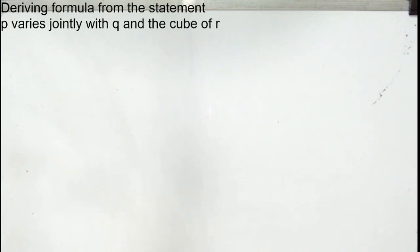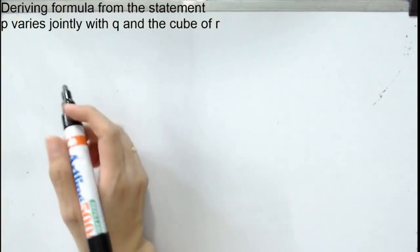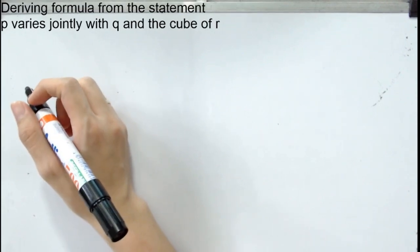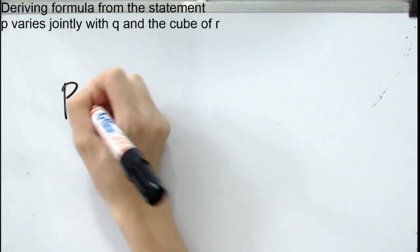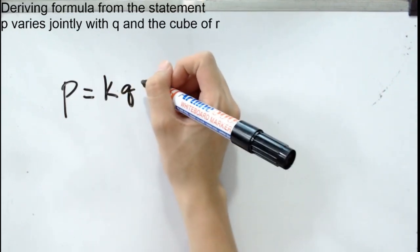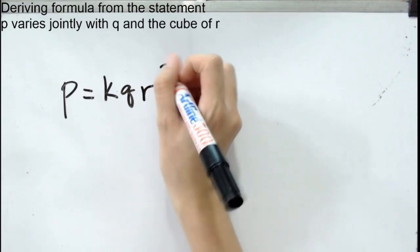Deriving the formula from the given statement: P varies jointly with Q and the cube of R. Therefore, the first thing we do here is to write what will be the formula from the given statement. Again, as I told you, whichever letter comes first will be the first letter that we need to write. If P varies jointly with Q and the cube of R, when we say cube of R, R raised to 3.